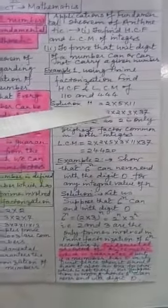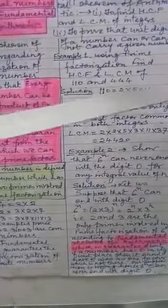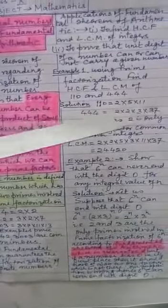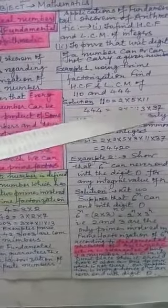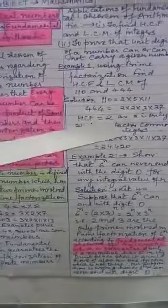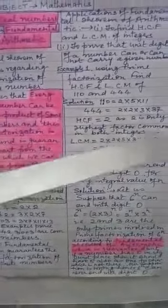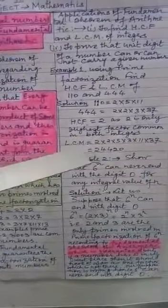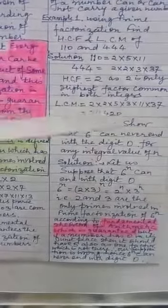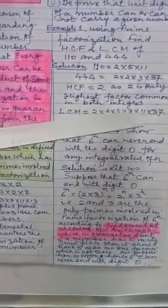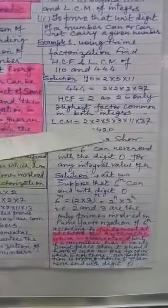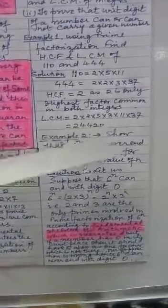So solution is 110 can be written as 2 into 5 into 11 and 444 can be written as 2 into 2 into 3 into 37. So their highest common factor is 2 and LCM is 2 into 2 into 3 into 5 into 11 into 37, which equals 24,420.